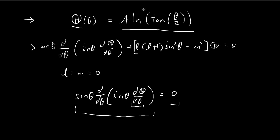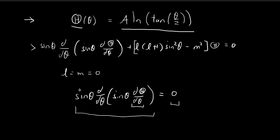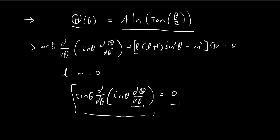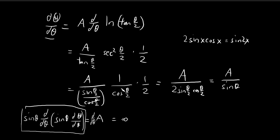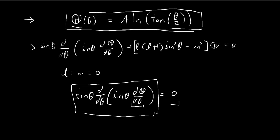The next step is to differentiate this term. What we're doing is differentiating a constant, so this equals 0. Then we attach another sin θ on the left, and on the right-hand side, we just multiply 0 by sin θ, which remains 0. So we have shown that the left-hand side expression of the differential equation is indeed equal to 0 for this specific expression for capital Theta. We have verified that this is indeed a solution to this differential equation.